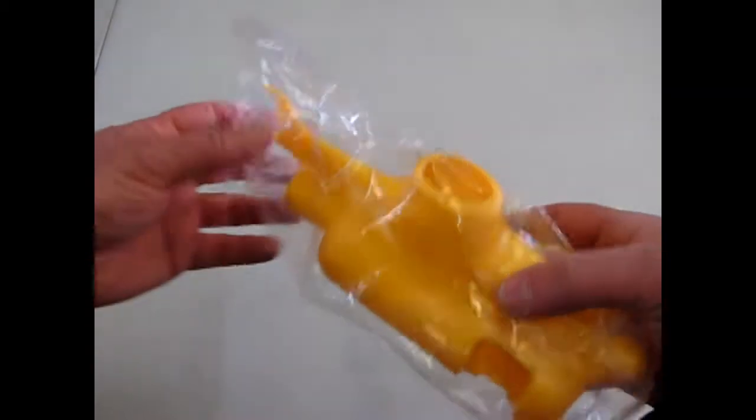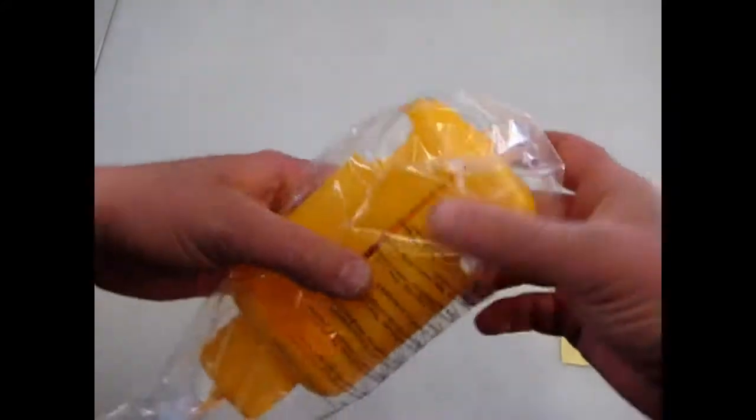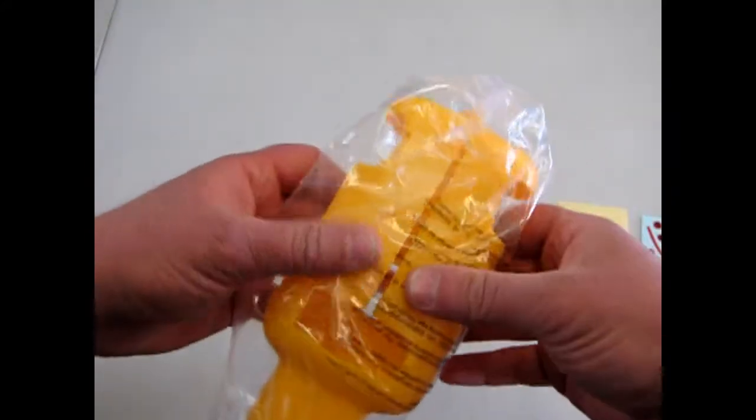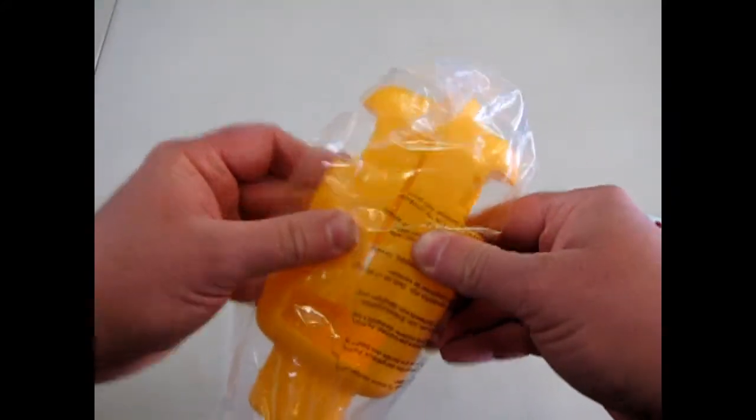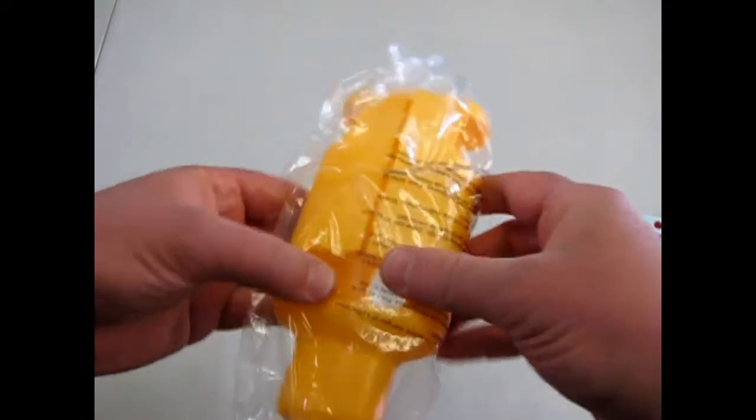Then we have our submarine here, which is actually two pieces. Of course, as you can see, you would have to glue them together, although in the bag here they've just placed them together nicely.